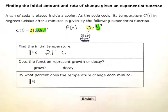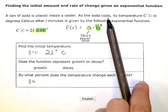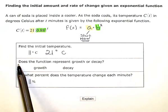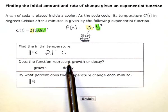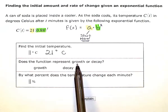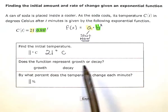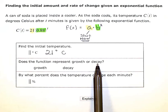Now, the soda is cooling. So the temperature is going down. So the next question says, does the function represent growth or decay? Growth would mean the temperature was going up or whatever value it is we're talking about is growing. Decay would mean that whatever value we're talking about is getting smaller.